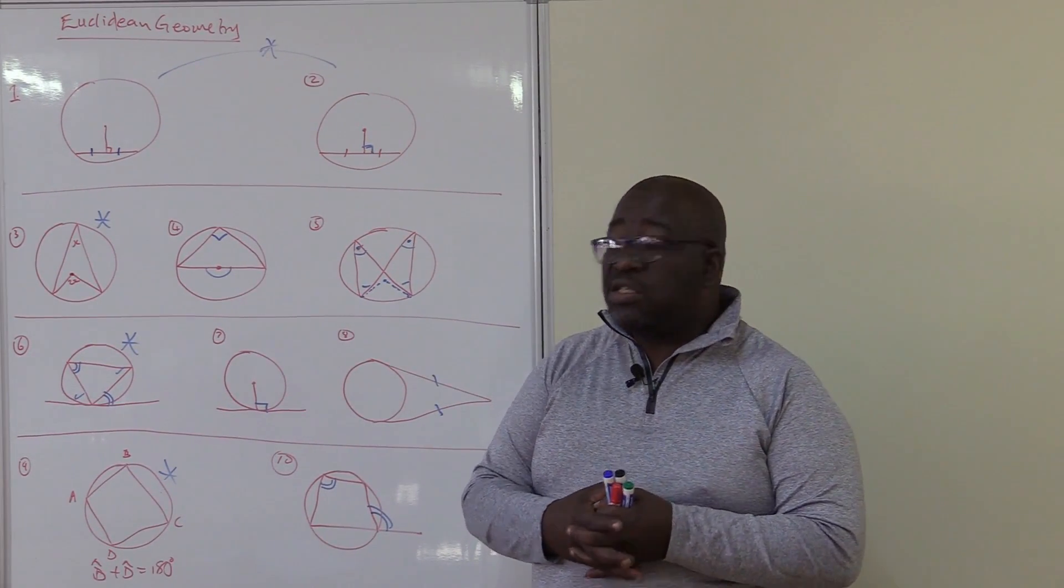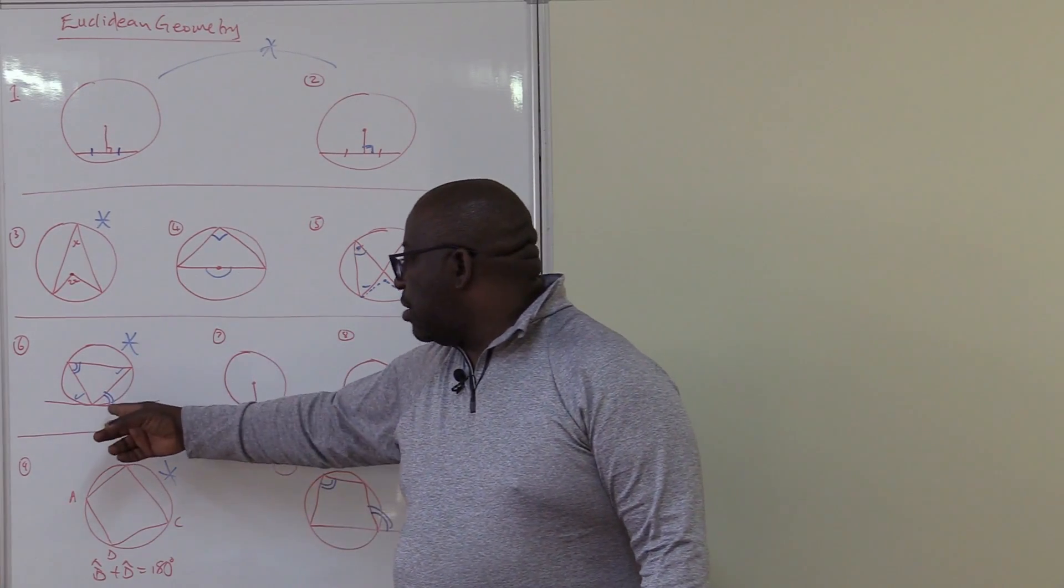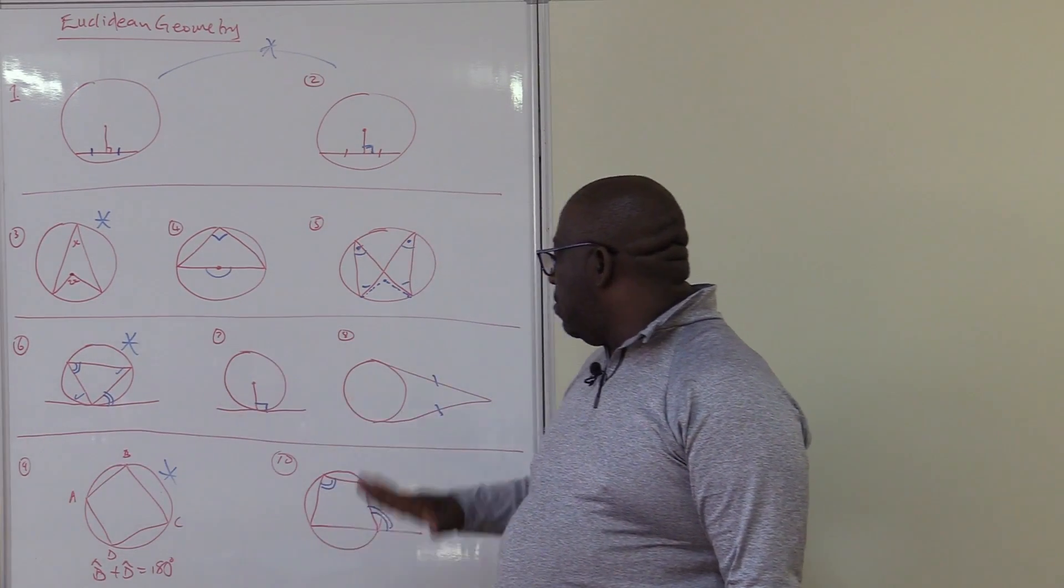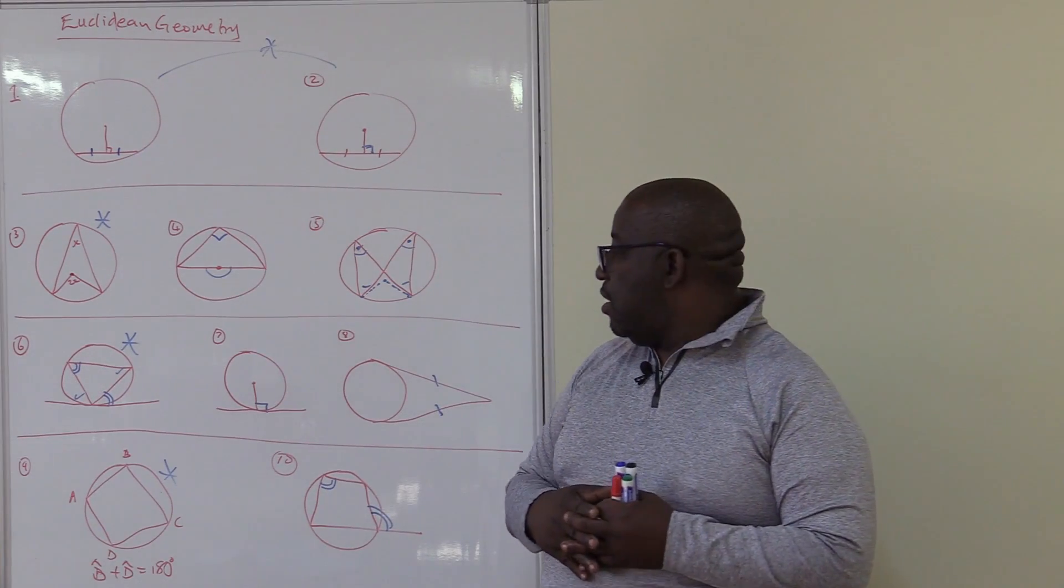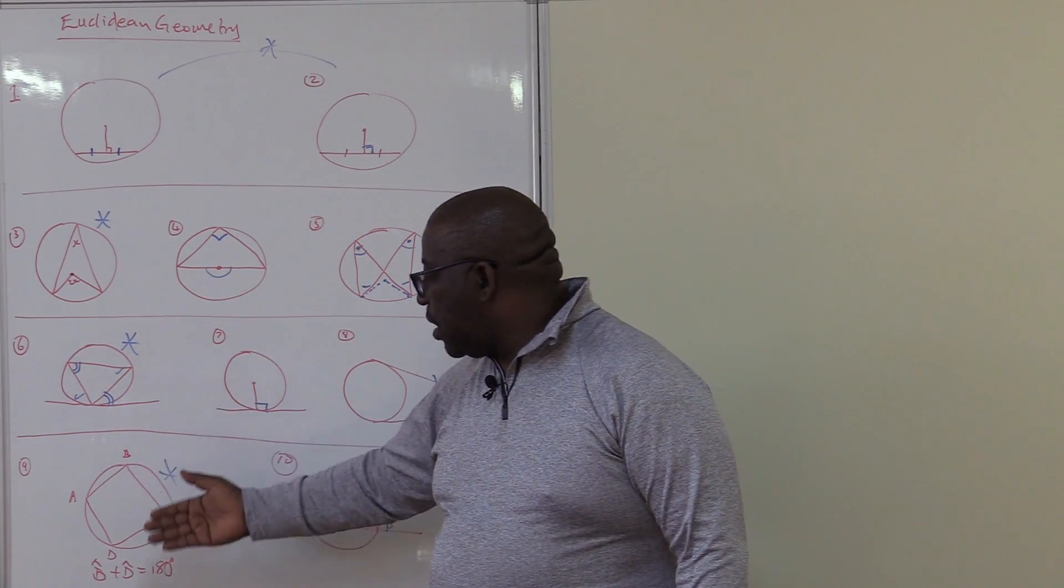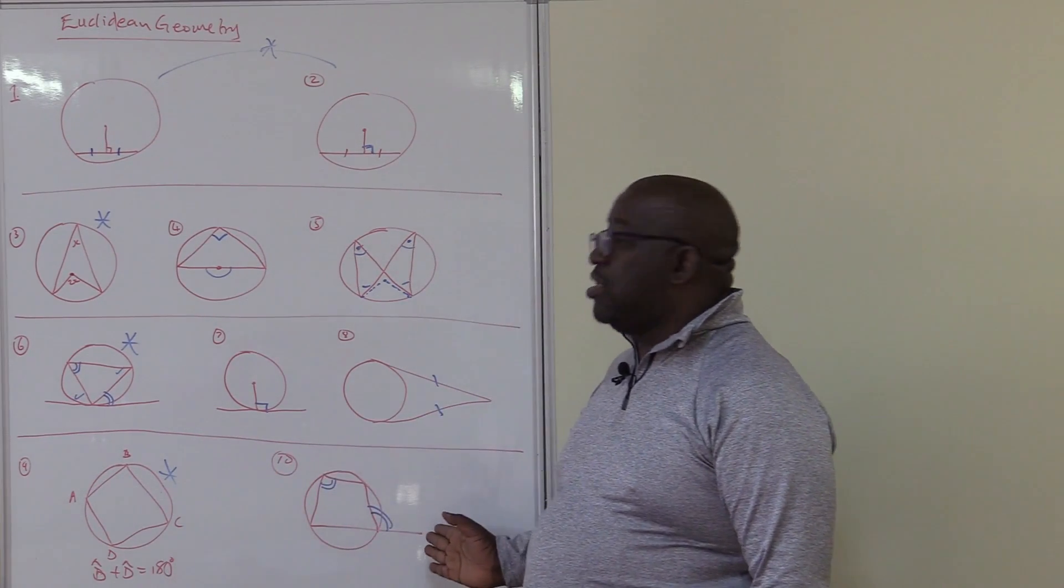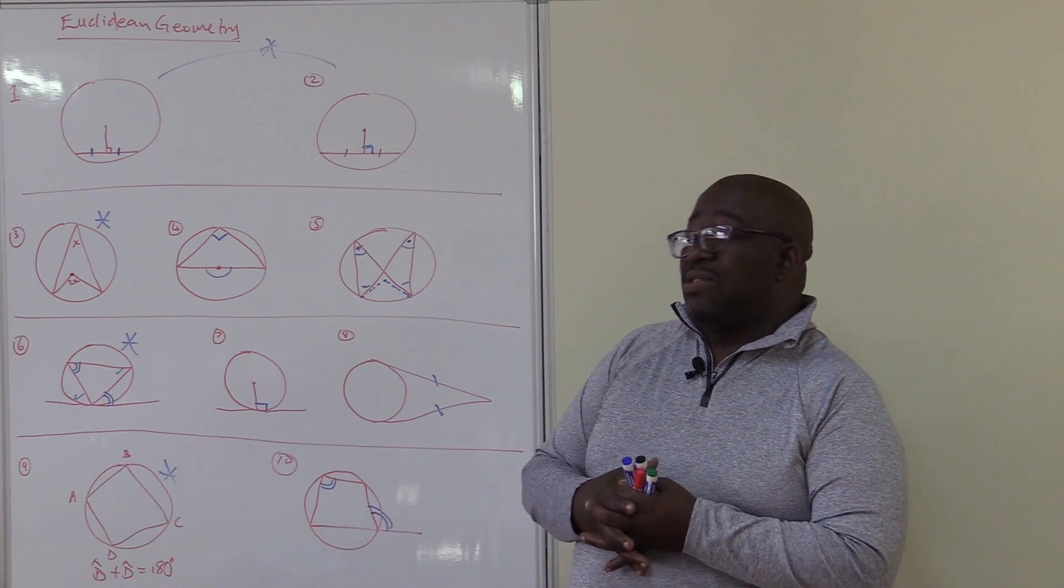If they say particular lines are tangent the solution will come from these 3. Tangent theorem. Tangent radius theorem. Two tangents from the same point. If they say cyclic quad there are only 2 theorems. The sum of interior angles of a cyclic quad are supplementary. Or the exterior angle is equal to the interior opposite angle.